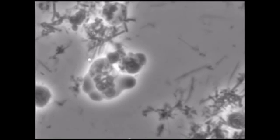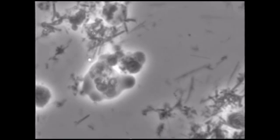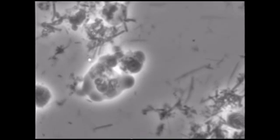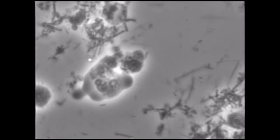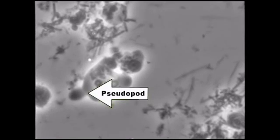The amoeba moved by putting out pseudopods or false foots, then flowing in the pseudopod motion. Somehow he's grabbed onto this white blood cell and is taking it with him, perhaps for a snack later.